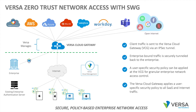The client traffic is sent to the Versa Cloud gateway via an IPsec tunnel. Enterprise-bound traffic is securely tunneled back to the enterprise. A user-specific security policy can be applied at the Cloud gateway for granular enterprise network access control. For example, a contractor can only access certain portions of the enterprise network, but an employee may have full access.